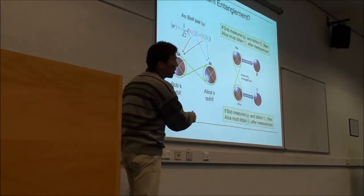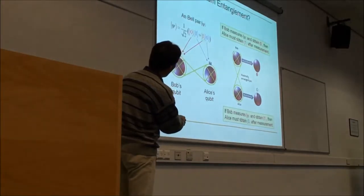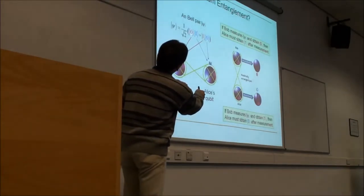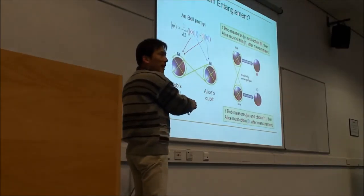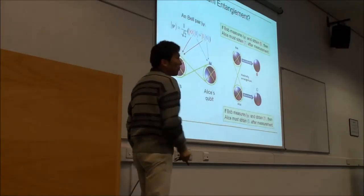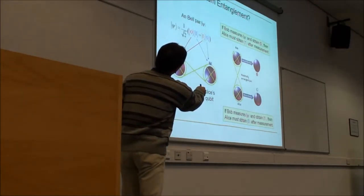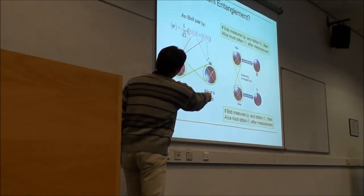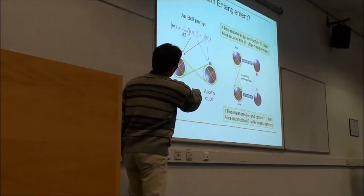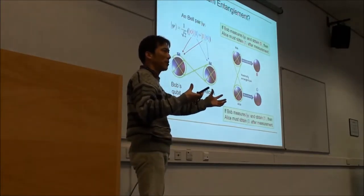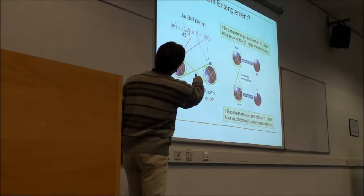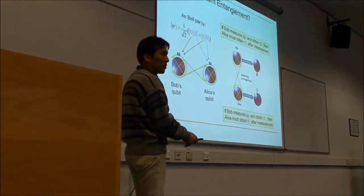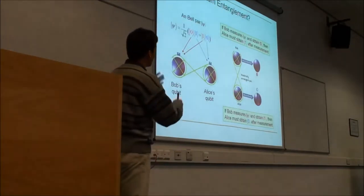Entanglement is the correlation between two qubits. For example, Bob has one qubit and Alice has one qubit. They create a particular state that is a mixture of two possibilities: first is 0 and second is 1, or first is 1 and second is 0. These two possible worlds exist with the same probability — 50% chance of 0-1, and 50% chance of 1-0. Nothing else.